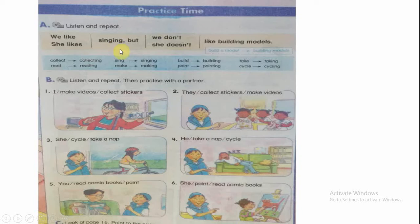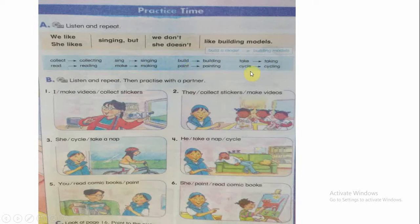Let's see these verbs. Collect — collecting. Read — reading. They come after like or likes when we use them as a gerund. Make — making. Build — building. Paint — painting. Take — taking. Cycle — cycling.